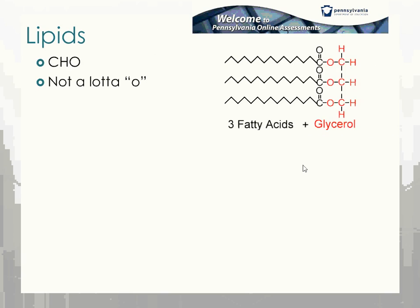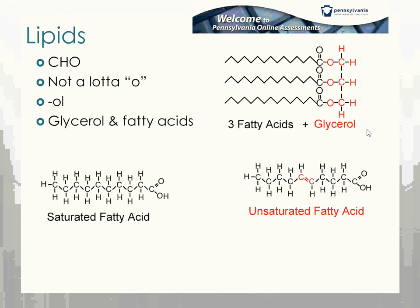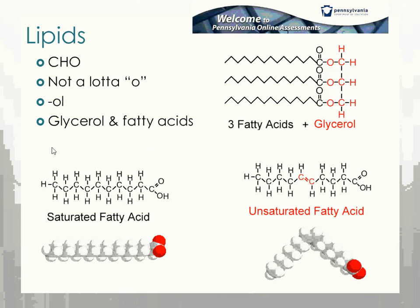Lipids are CHO but with not a lot of O — a much higher number of carbons and hydrogens than oxygens. That squiggly zigzag tail represents a carbon with two hydrogens at each corner point. They typically end in '-ol,' like glycerol. The monomers are fatty acids — the long chain part — and glycerol. Saturated fatty acids hold the maximum number of hydrogens, making them pretty straight or linear, like animal fat, lard, or butter, which are solid at room temperature. Unsaturated fatty acids are missing some hydrogens, giving them a kink — these are more like plant oils, liquid at room temperature.